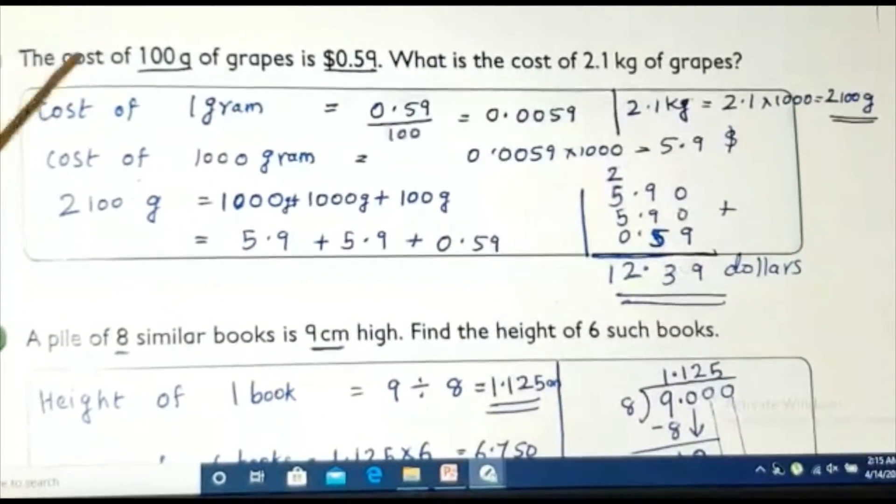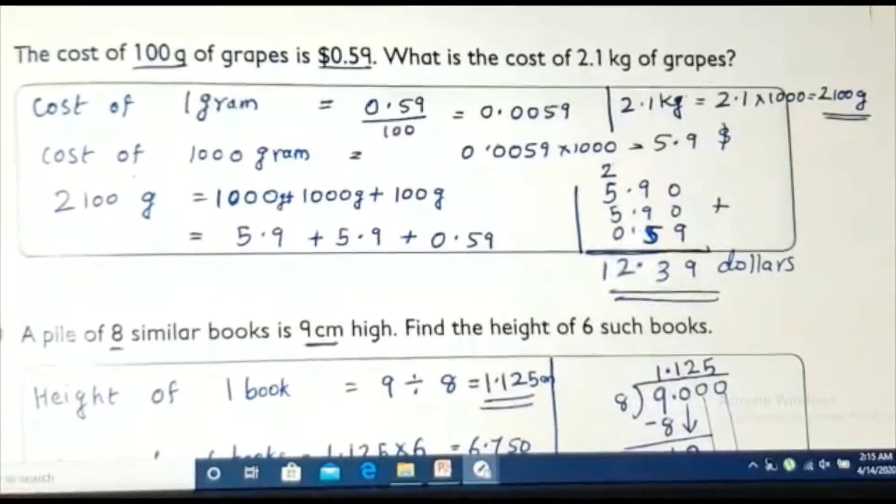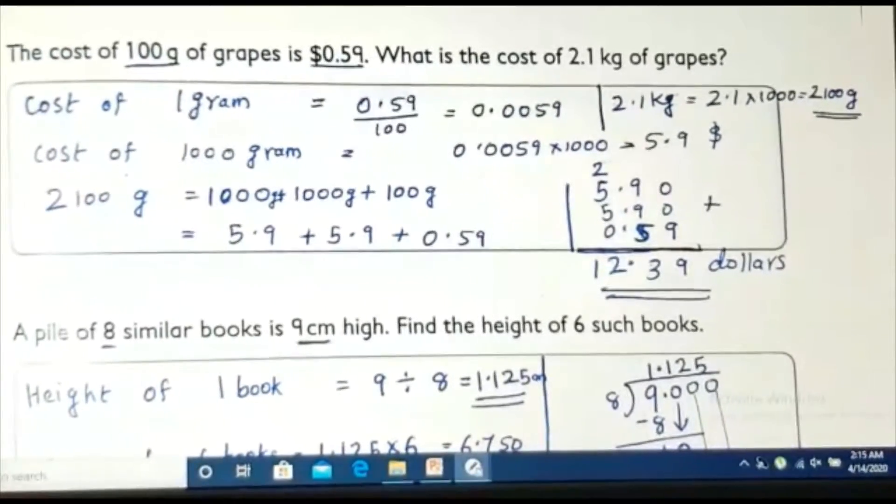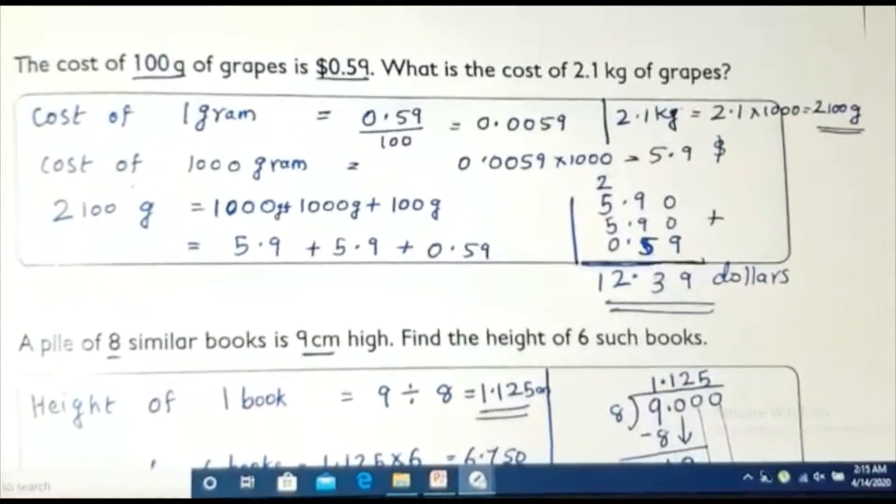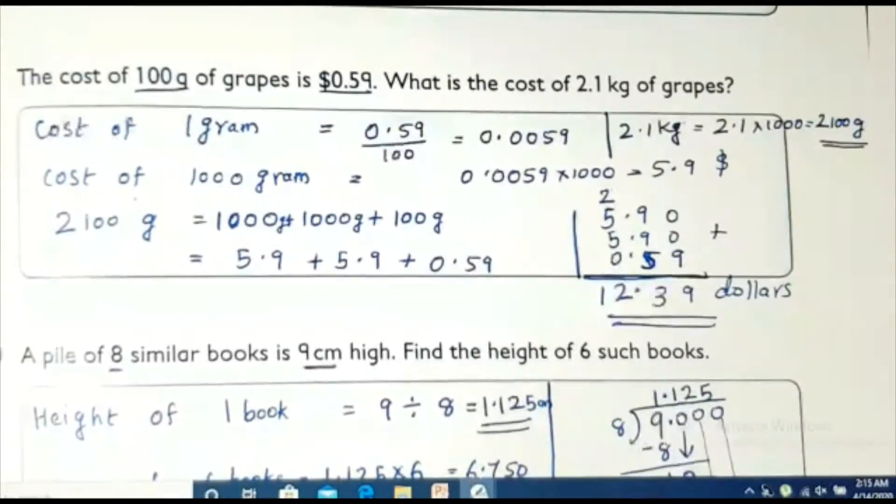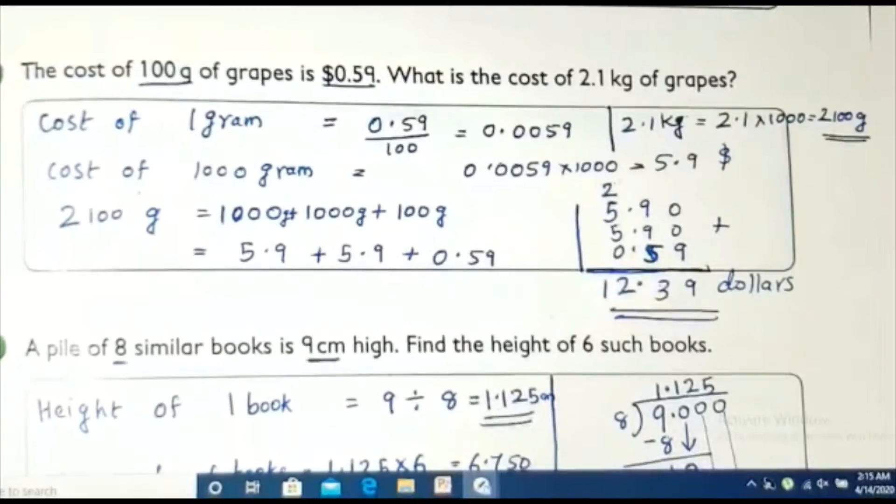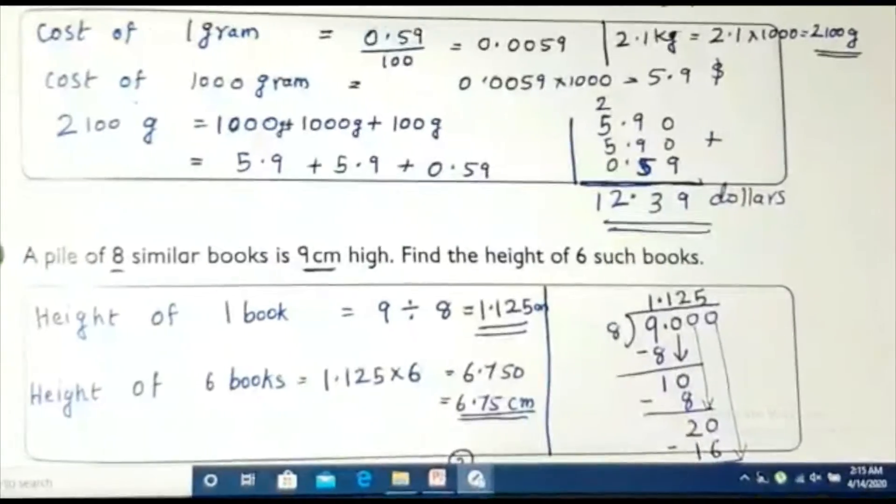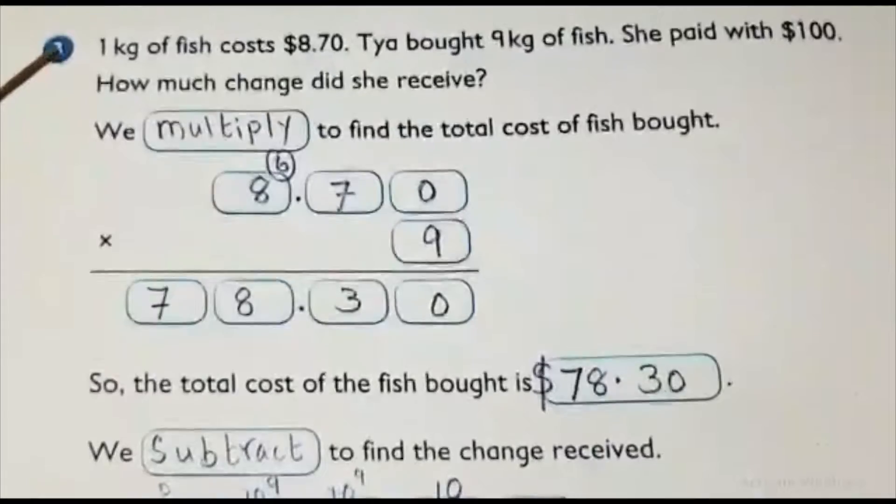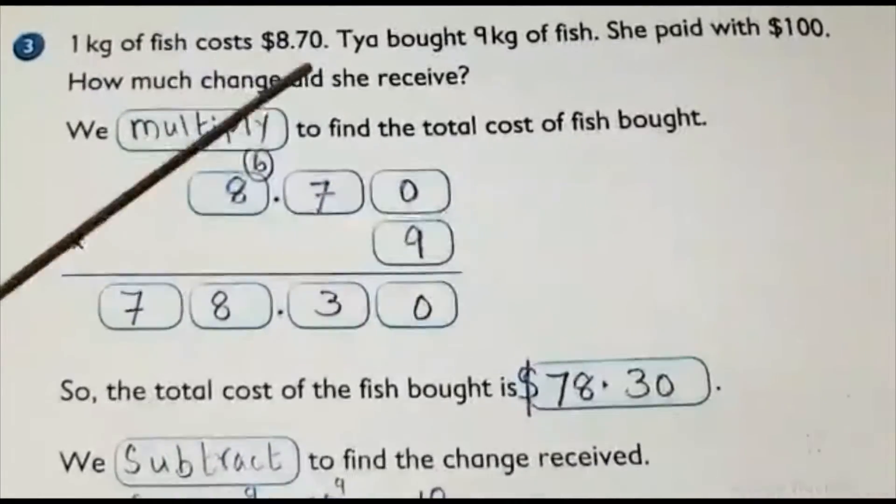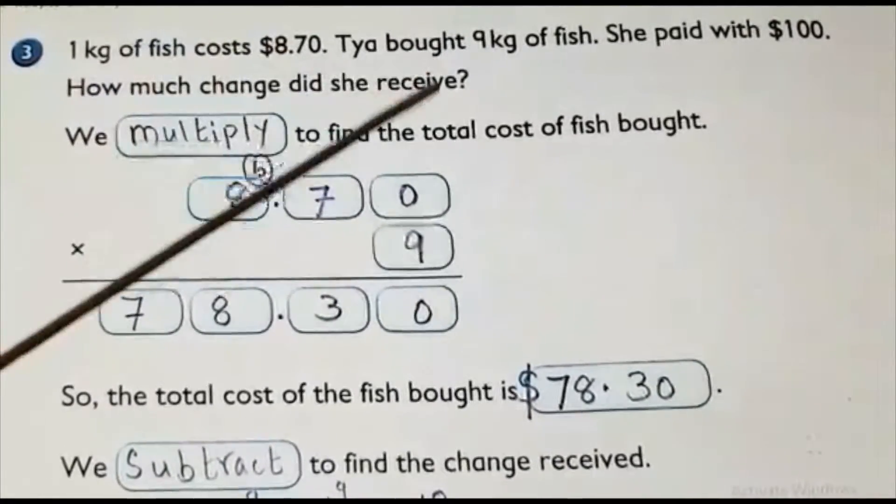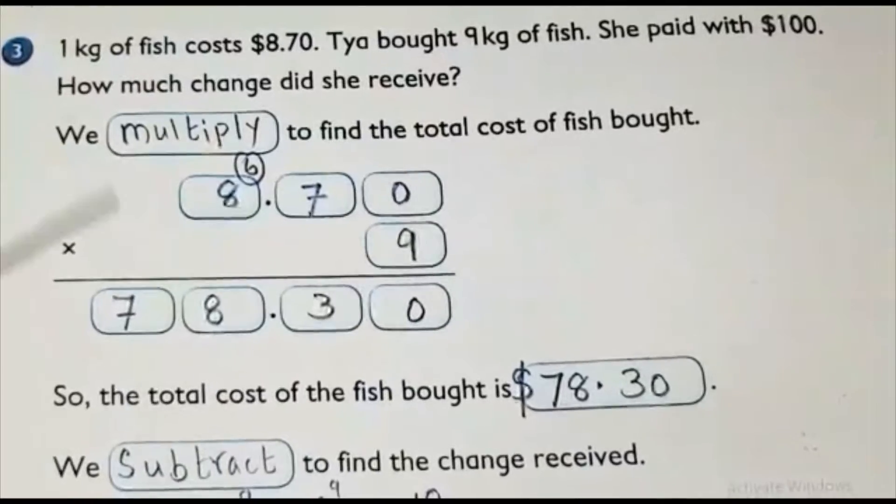You may get bit confused about this but you listen and read the question and try to do it different times several times. If you have any doubts you can just contact me over WhatsApp and we can do the last sum also. Third answer for third question. 1 kg fish cost 8.70. Tia bought 9 kg. She paid 100. How much change she received?